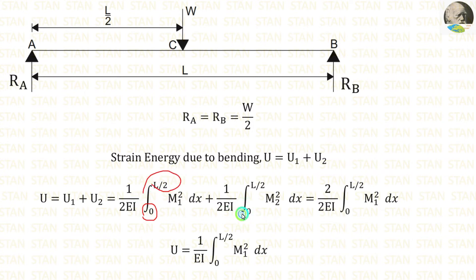The limits for the first part will be 0 to L by 2. The limit for the second part also 0 to L by 2. For the first part, we have to start from the left side. For the second part, we have to start from the right side.